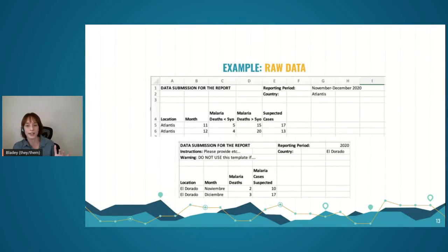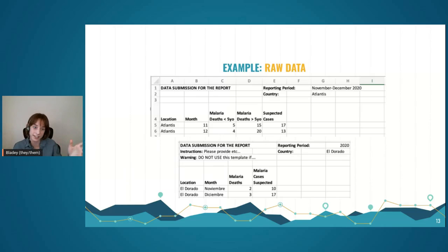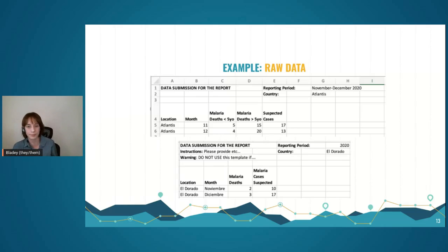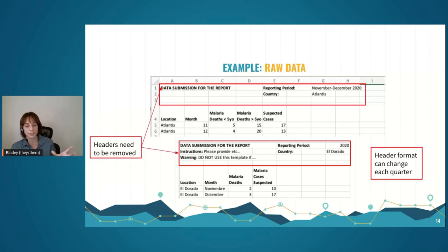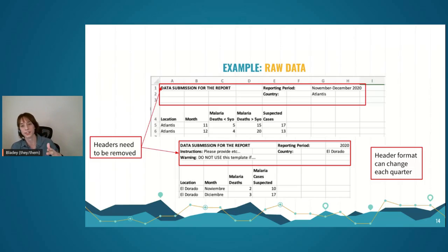Here's some mock data submissions I've drawn up with the fictional countries of Atlantis and El Dorado. One challenge is that there are human-readable but not machine-readable headers at the top which have to be removed, and they're different between country submissions. They're also different even within a country over multiple quarters — we get data quarterly and the same country might submit with different header types at different times.